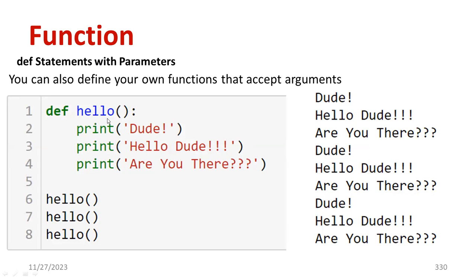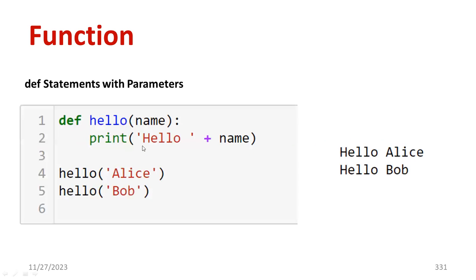There is another example. You can also define your own function that accepts arguments — whatever you type inside the parenthesis is called arguments. The importance of the DEF statement is shown again: DEF hello(name). Here, hello becomes the function name. The function body is: print hello + name.